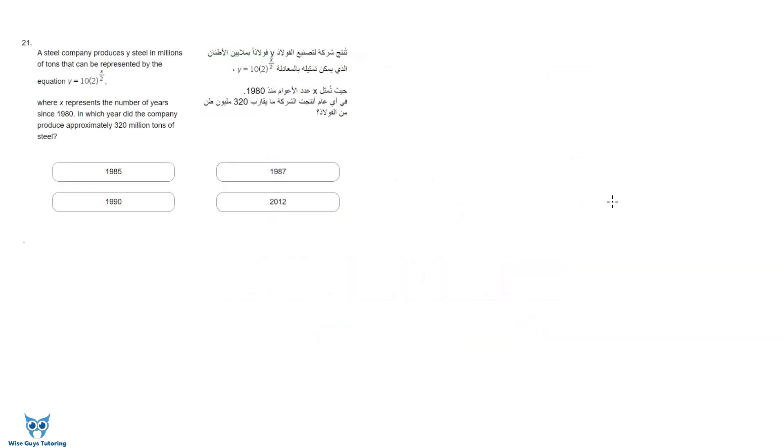So let's get started here. It says a steel company produces y steel in millions of tons that can be represented by the equation y equals 10 times 2 to the power of x over 2, where x represents the number of years since 1980. In which year did the company produce approximately 320 million tons of steel? So 320 million tons, that would be y, but since y is already in millions of tons, you don't have to write 320 million, we'll just write that y is 320.